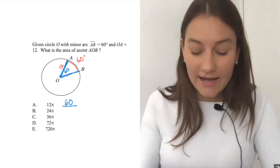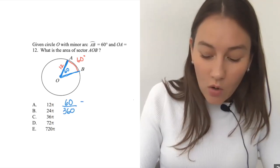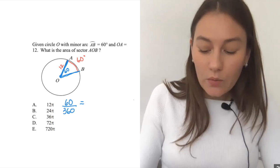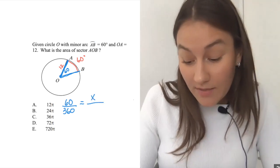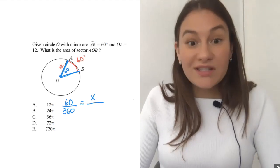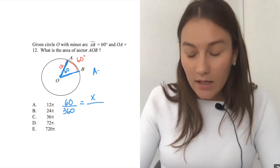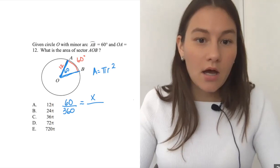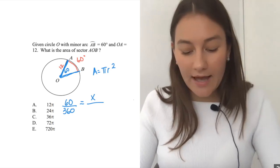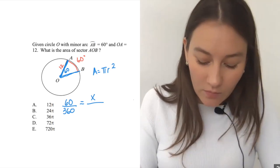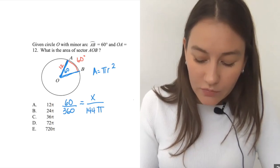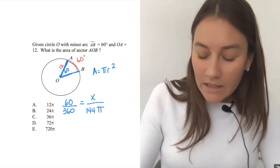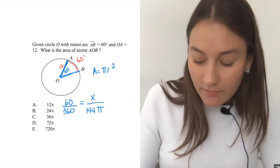So now I have my angle. So I know 60 degrees over 360 degrees is going to be equal to, well, I'm looking for the area of AB. So I'm just going to make that an X. And what's the total area of the circle? Well, how do I find total area of a circle? Pi r squared. So we have r is 12. So pi r squared is going to equal to 12 squared pi, which is 144 pi. So that's going to be my area. That's going to be my denominator there.